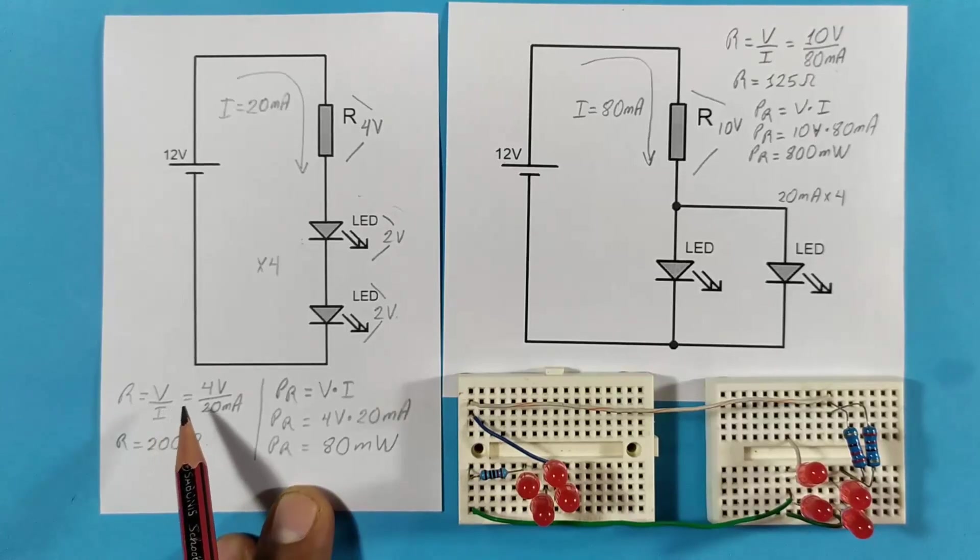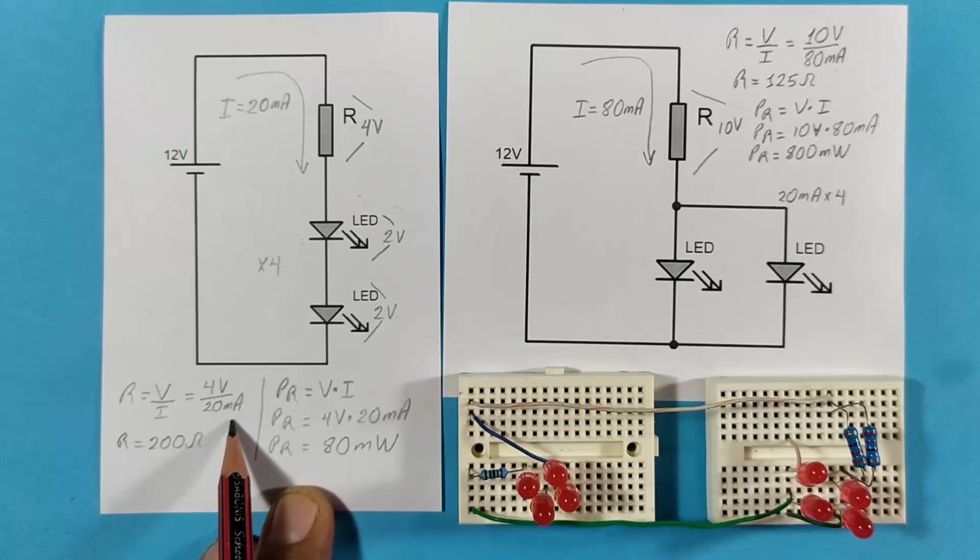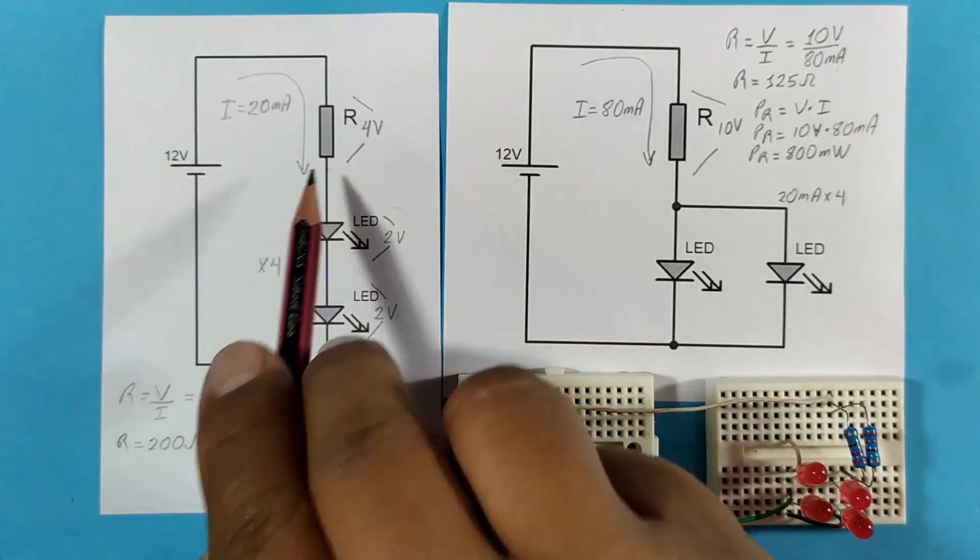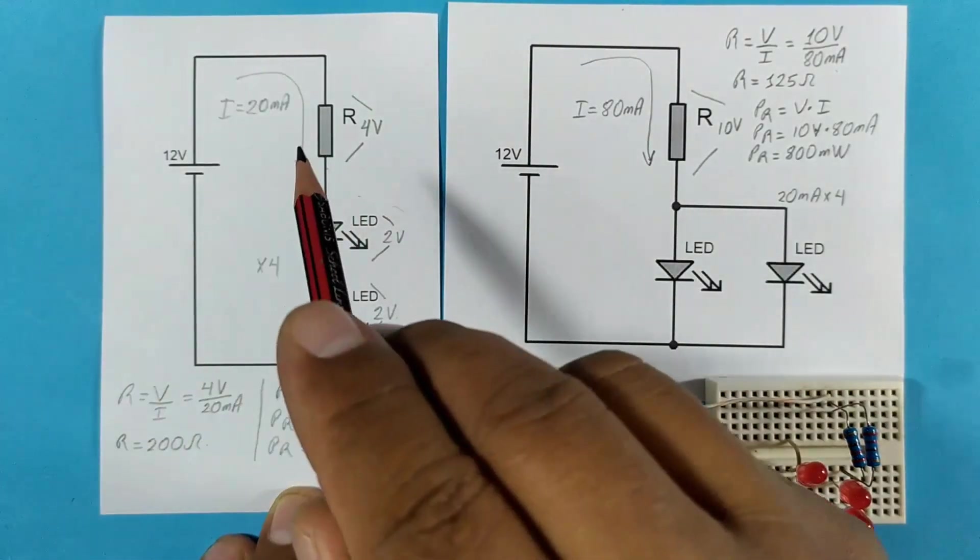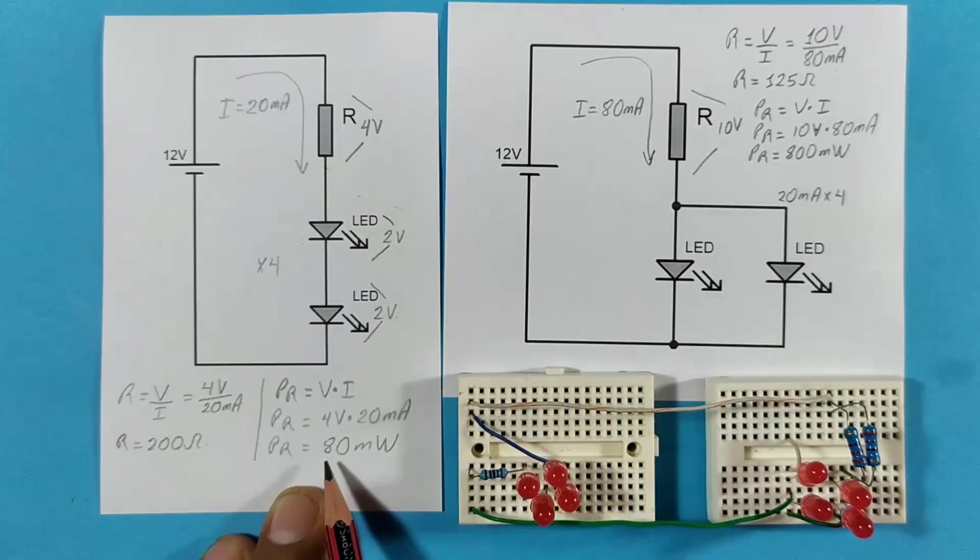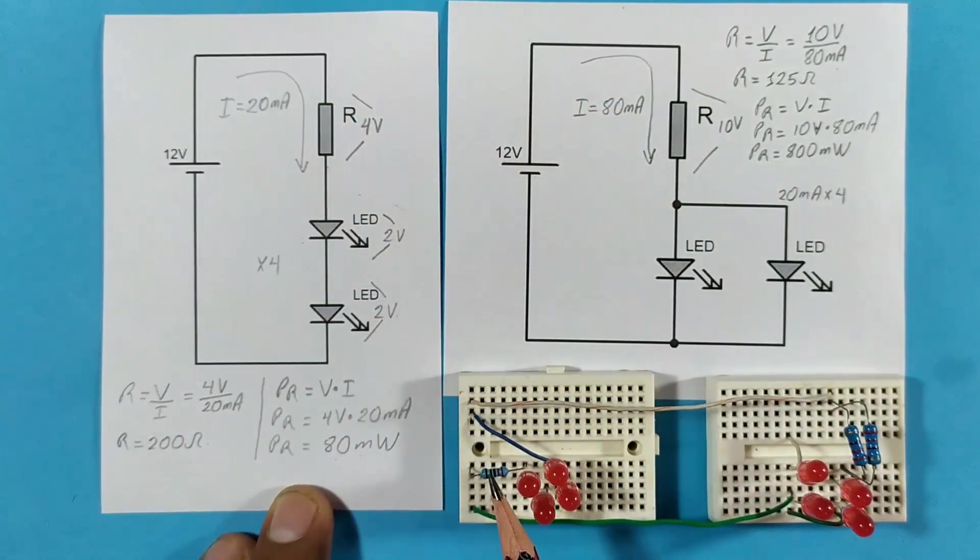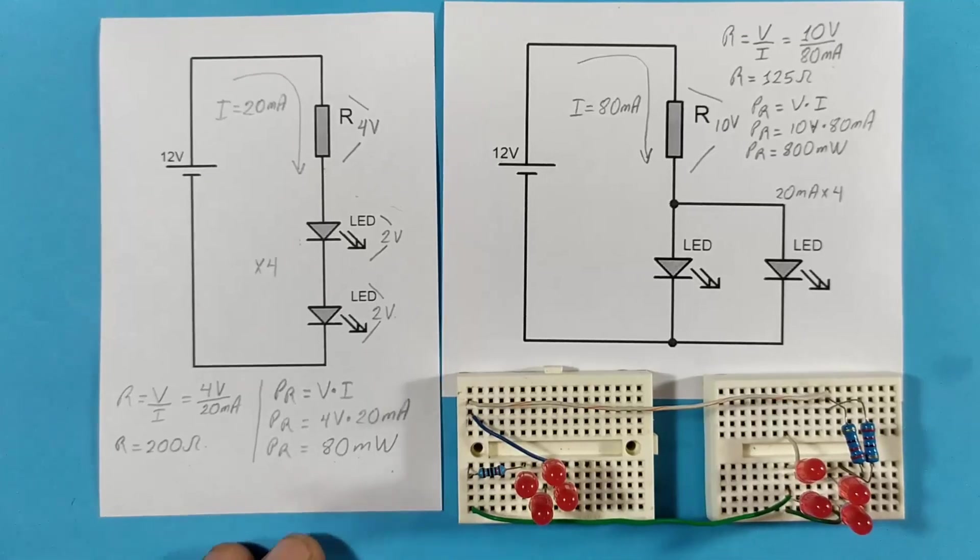And based on the formula, where if 4 volts fall and 20 milliamps pass, we would need a 200 ohm resistor. The power or size of that resistor is going to be only a quarter of a watt since we don't even get to 100 milliwatts. Here we have this 220 ohm resistor, the closest I have. It's quite small since it's a quarter of a watt.